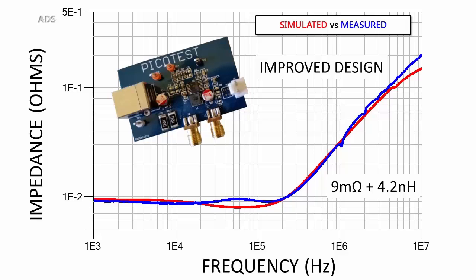Our improved design of this VRM is flat and can be represented as 9 milliohms and 4 nanohenries in a signal integrity simulator.